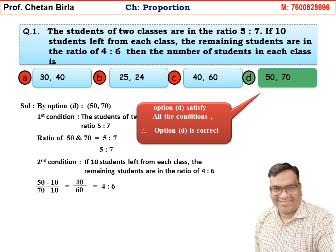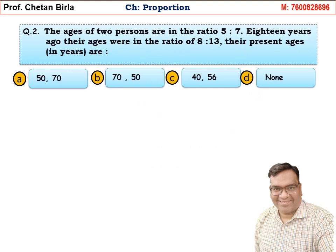Question 2: The ages of 2 persons are in the ratio 5 is to 7. 18 years ago, their ages were in the ratio 8 is to 13. Their present ages in years are — Options A, B, C, D.